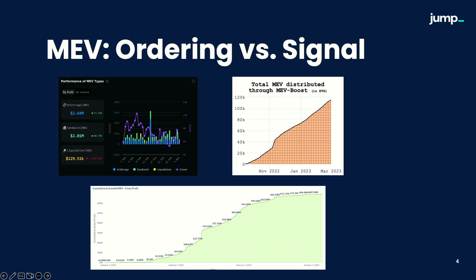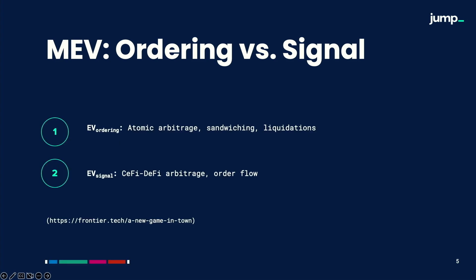Up here are a few of the dashboards with which you're likely familiar — there's Eigenfy, there's mevboost.pics, there's Flashbots. This is all internal MEV. The post by Frontier is defining the difference between ordering and signal MEV. Ordering is what we're used to: it's the atomic arbitrage, it's sandwiching, it's liquidations, including for example Uniswap JIT liquidations. Signal MEV, on the other hand, would involve some external frame of reference, some notion of truth. That would be what we'd get if we were performing CeFi-DeFi arbitrage, or if there were any notion of proprietary order flow.